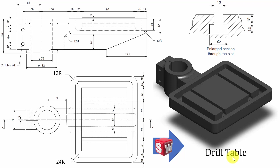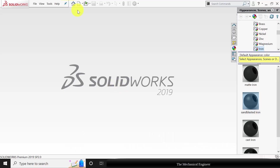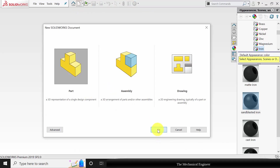Hello all, welcome to the SolidWorks tutorials. In this tutorial we are going to draw the drill table. The drawing dimensions are given — they are included in the description and you can download the PDF file. Open SolidWorks and create a new part.